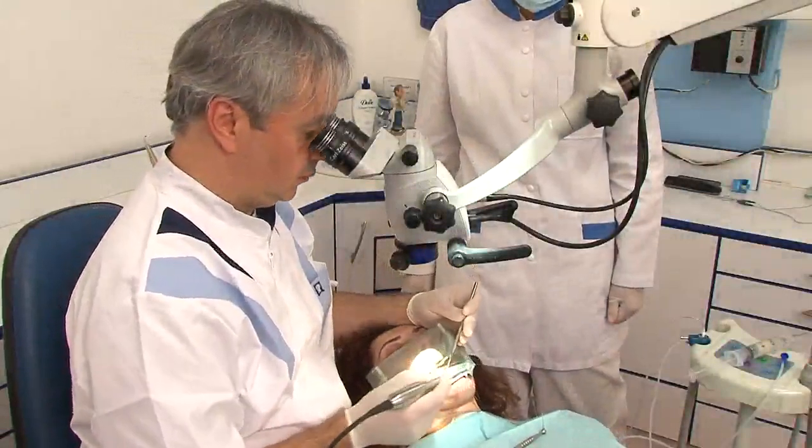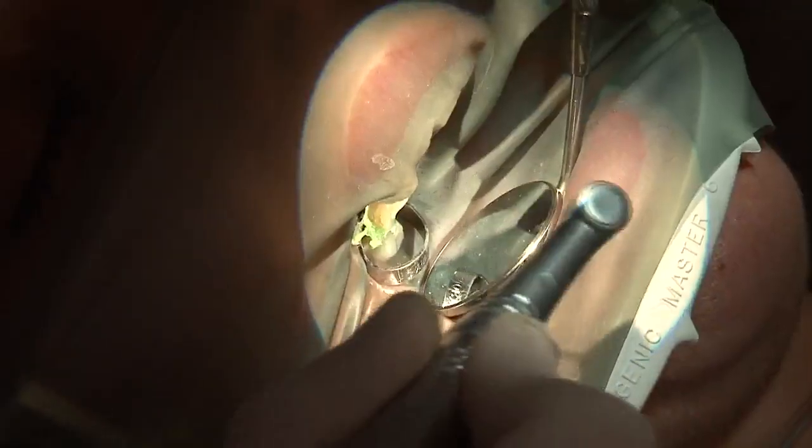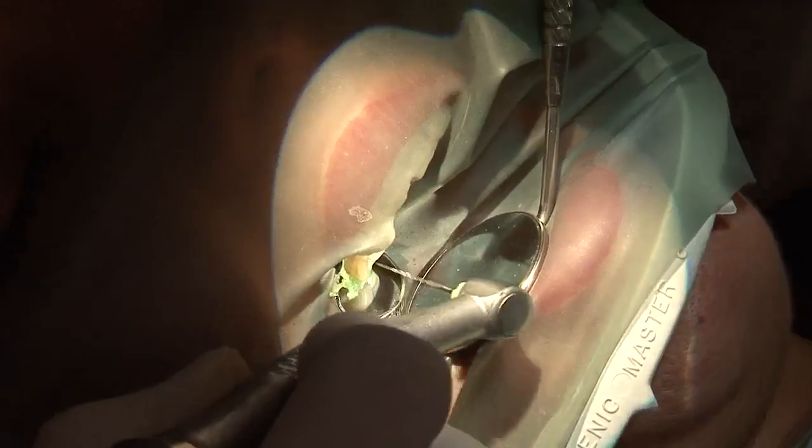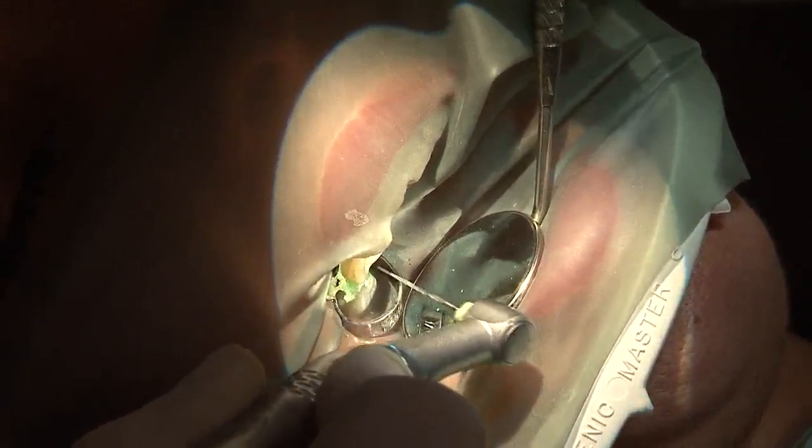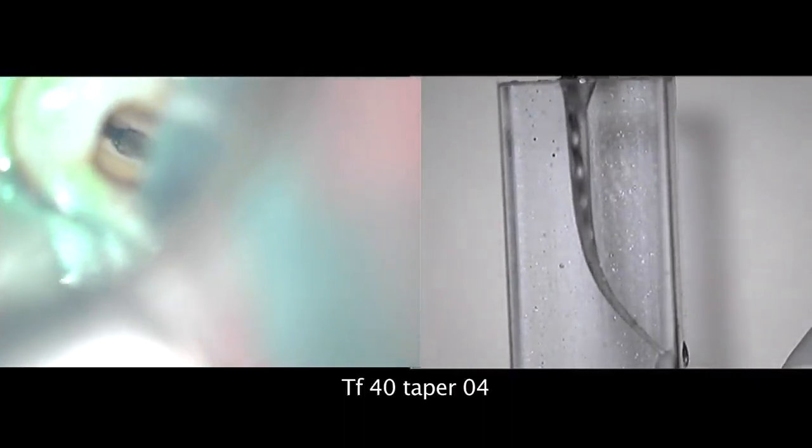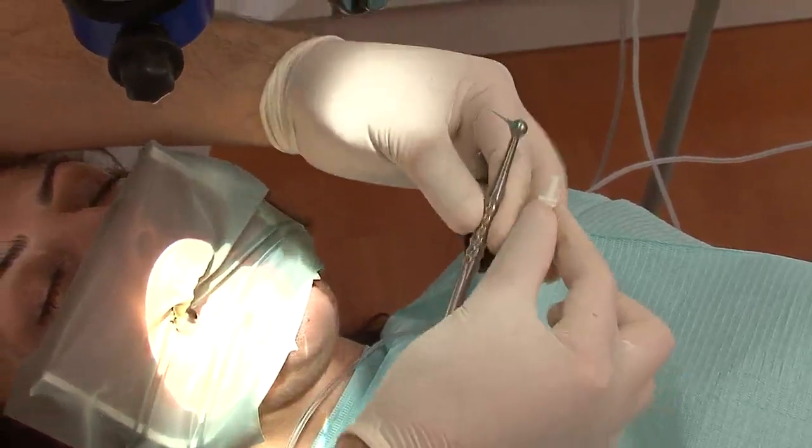Apical enlargement with TF 40 taper 4. I use the 40-04 in TFs due to the flexibility of the alloy. I can make the jump from 25-06 to 40-04 and I can enlarge my apical area to size 40 for different biological consideration. You can see that the debris are concentrated in the apical area of the file.